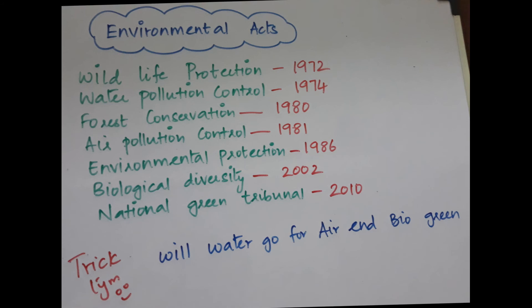The years are very simple and in ascending order: 1972, 1974, then 1980, 1981, 1986 — all in ascending order, making them easy to remember.